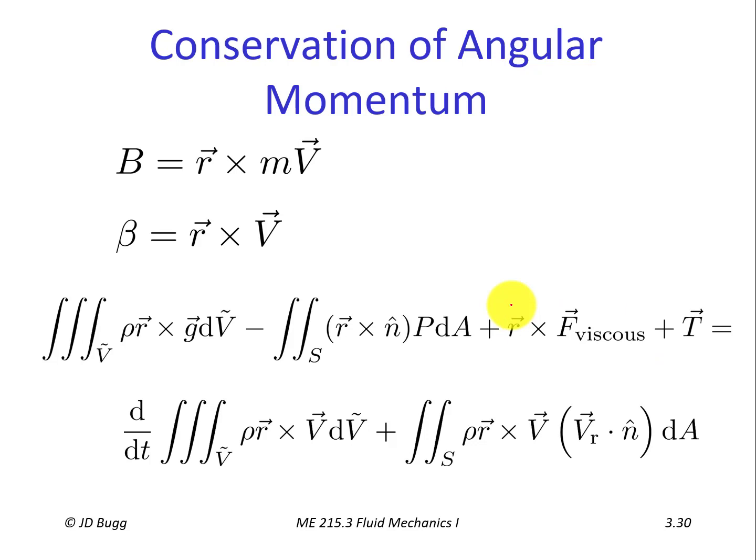Finally, instead of a reaction force, we have a reaction torque, which we call T instead of R. The physical meaning is exactly the same — recall in linear momentum the control surface could cut through a solid object that exerts a force on the control volume; that solid object can also exert a torque or moment on the control volume, and that is what T accounts for. This concludes the development of the conservation of angular momentum equation, which is analogous to linear momentum but with an r cross in every term.